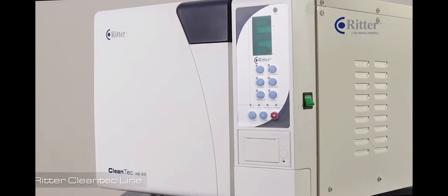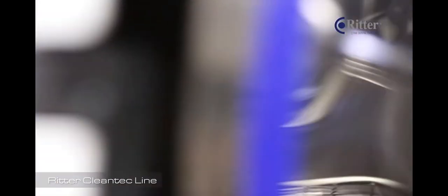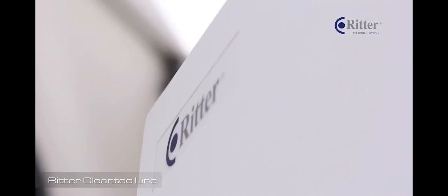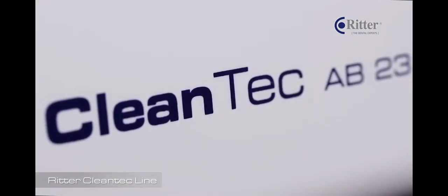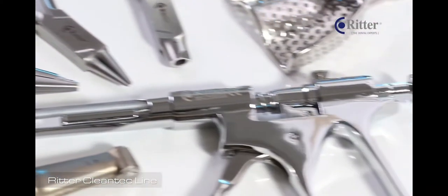Powerful, reliable and most effective. The first class of sterilization. The autoclaves of the Ritter Cleantech line are class B all-in-one sterilization systems.